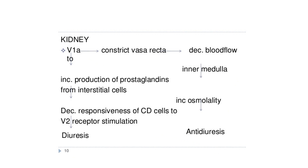Through V1a receptors in the kidney, vasopressin constricts the vasa recta, decreases blood flow, increases osmolality, and causes anti-diuresis. V1a receptor activation also increases production of prostaglandins from interstitial cells, decreasing responsiveness of collecting duct cells to V2 receptor stimulation, which can even lead to diuresis.